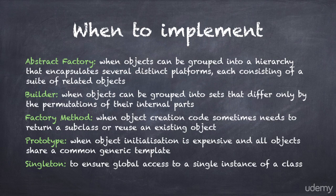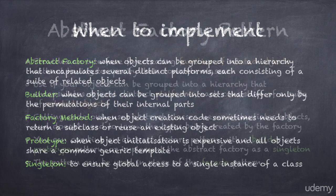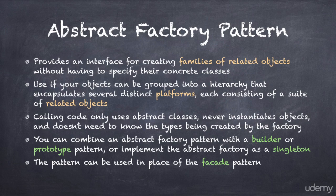Let's summarize these patterns one by one. You use the abstract factory design pattern to create families of related objects. The calling code uses the factory to create objects — it never instantiates objects directly, and it doesn't need to know the exact type of the object being created by the factory.